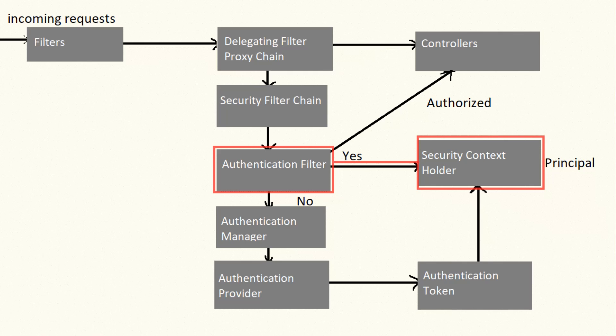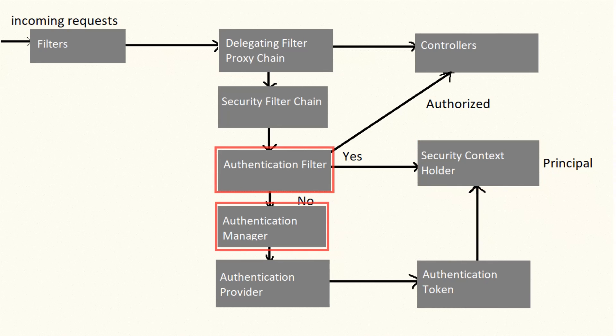This context holder holds the information about the user who is currently logged in. If it is anonymous or empty, this indicates that the incoming request is from a user who is not authenticated. So the authentication filter calls the authentication manager.